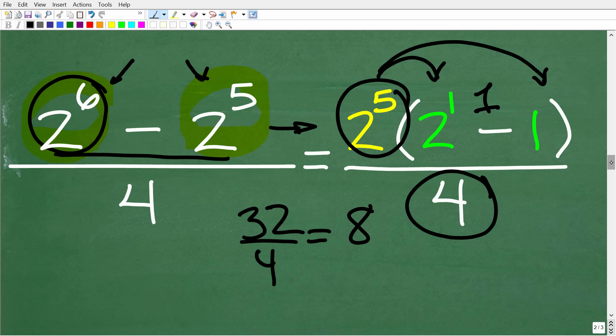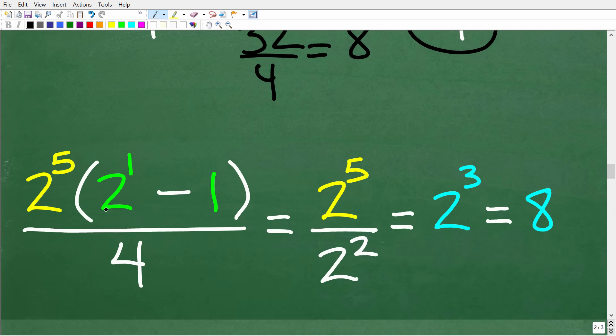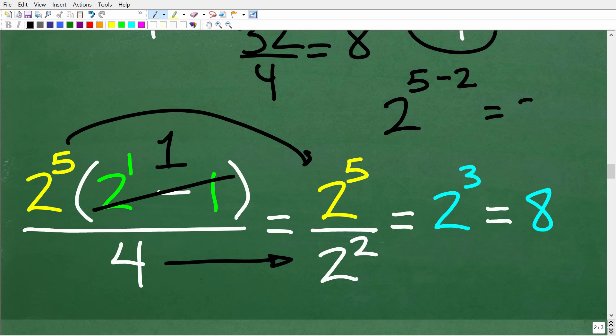But again, if you understand powers and exponents, we can look at it this way. So 2 to the 1st minus 1 is simply going to be 1. So now we have 2 to the 5th over 4, but we can write 4 as 2 squared. Now when you are dividing powers with the same base, you subtract the exponents. So the answer here is going to be 2 to the 5 minus 2, which is 2 cubed or 8 because this is 2 times 2 times 2, which is 8.